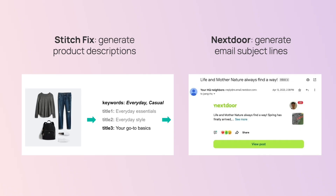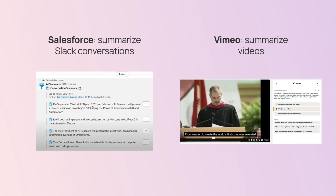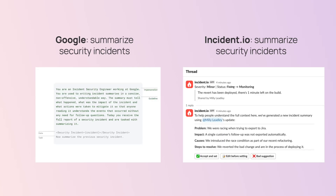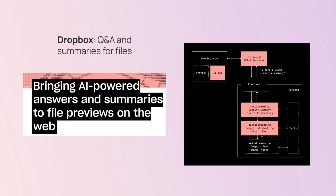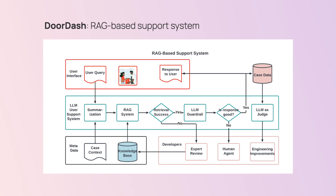Here are a few real-world examples of how companies are using large language models to create products. Stitch Fix and Nextdoor create marketing texts with LLMs. Salesforce summarizes Slack conversations. Vimeo summarizes videos. Google and Incident.io summarize security incidents. Dropbox lets you ask questions about files. DoorDash built an LLM-based support chatbot. I'll link to more examples like this below.